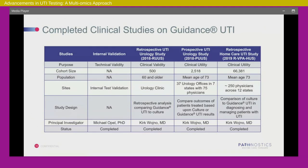To date, we've completed four large clinical trials to support the development of this work. We did an original internal validation, followed by a 500-patient clinical validity study on patients aged 60 and older. Our first large randomized trial was a prospective study with three arms looking at 2,518 patients from 37 urology offices in seven states with a mean age of 73, comparing clinical outcomes of patients treated based on culture versus our Guidance UTI result. Most recently, we looked at a 66,000-patient cohort retrospective study examining rates of hospitalization and emergency room visits in this population.